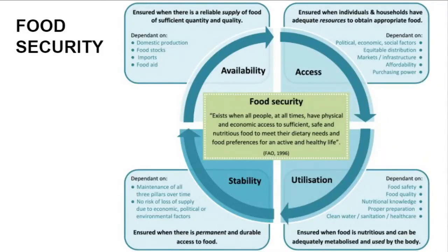Now let's look at the food security aspects. Food security exists when all people at all times have physical and economic access to sufficient, safe and nutritious food to meet their dietary needs and food preferences for an active and healthy life. We can categorize this in four ways. The first is availability, meaning there is sufficient quantity and quality in the supply of food.